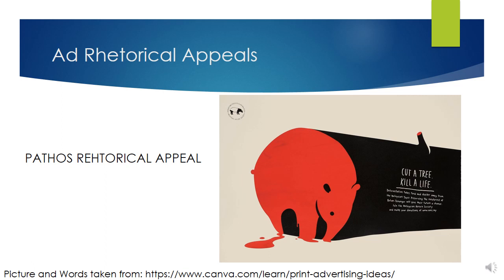Not much ethos is used in this ad. The ad uses logos by logically explaining the ad's purpose step by step. It logically explains that the trees provide food and shelter for the tapirs, so the animals are dying when deforestation occurs. Then it goes on to say that preserving the rainforest will save the animals. However, the ad does not explain how the Malaysian Nature Society will help save the rainforest.